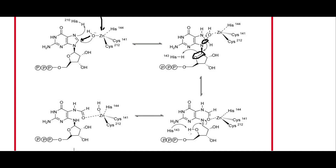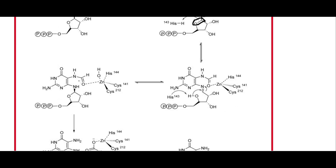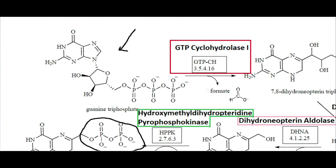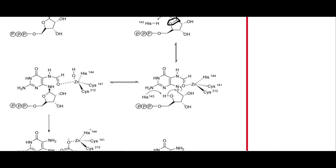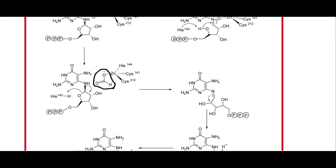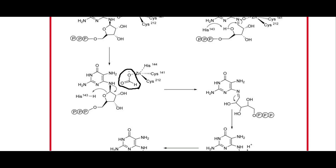This now-deprotonated histidine deprotonates an OH group, and the electrons from that oxygen attack the adjacent double bond, with electrons going up onto the nitrogen and grabbing a hydrogen. This oxygen attacking closes the ring on the structure. From here we lose a formate molecule in this step.